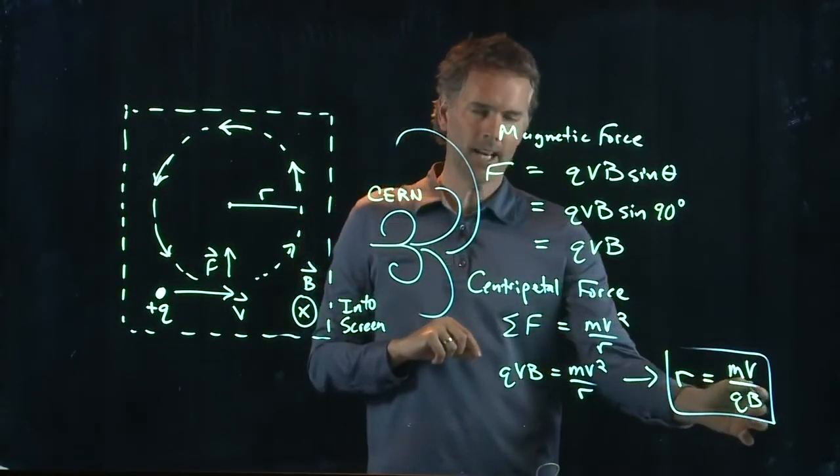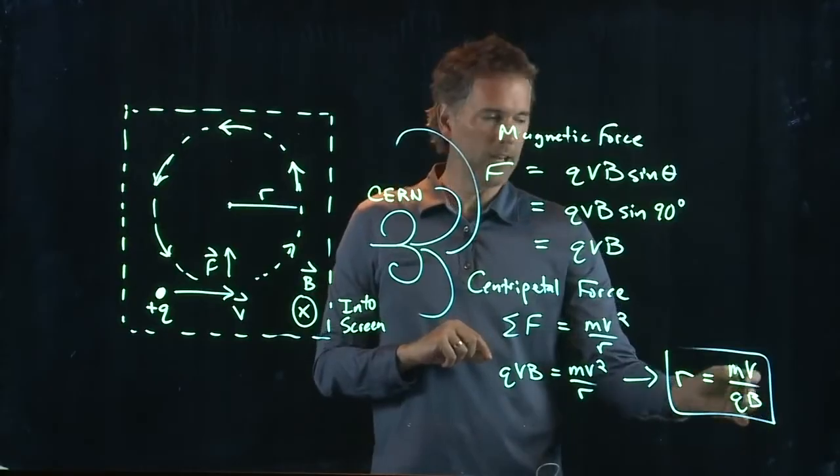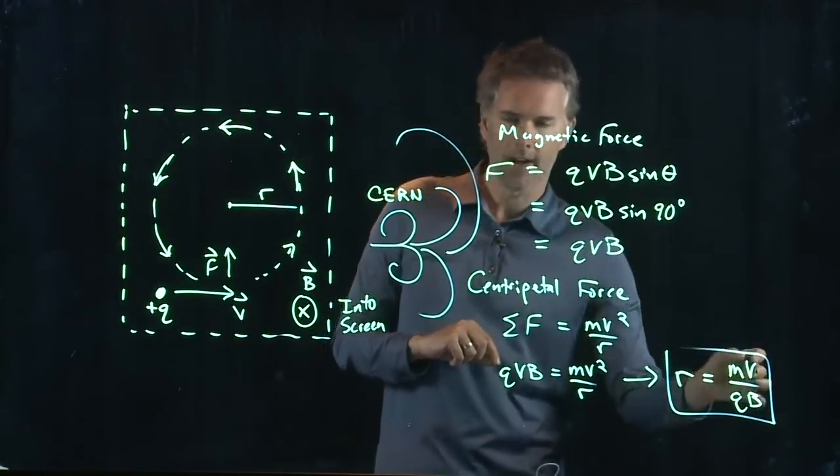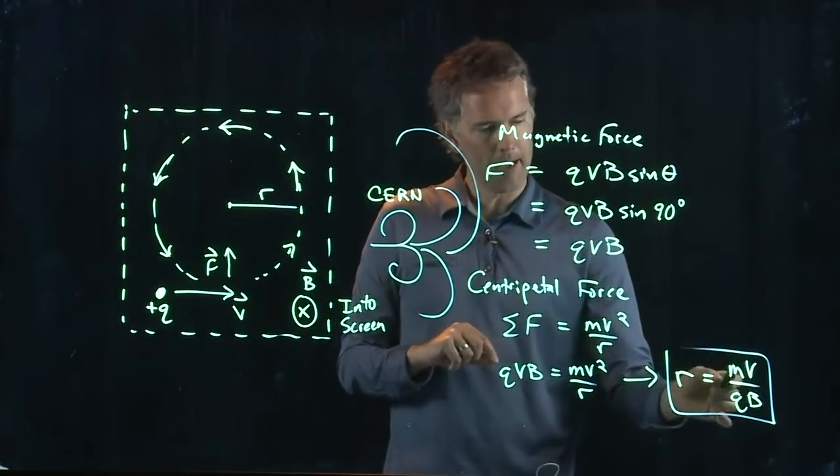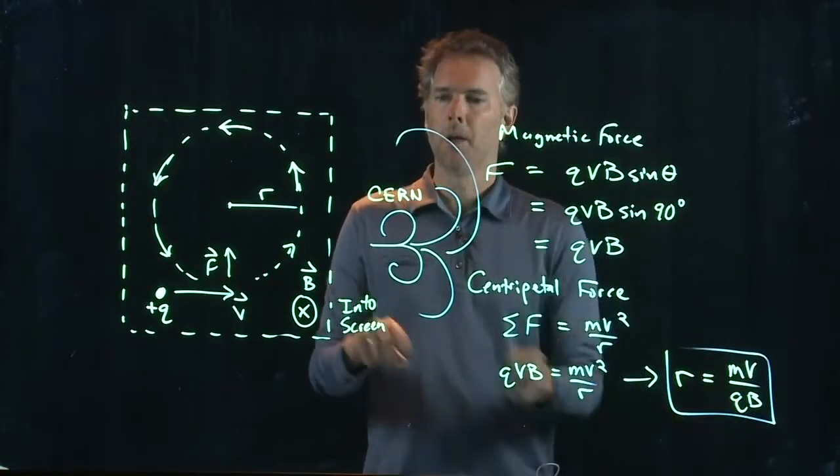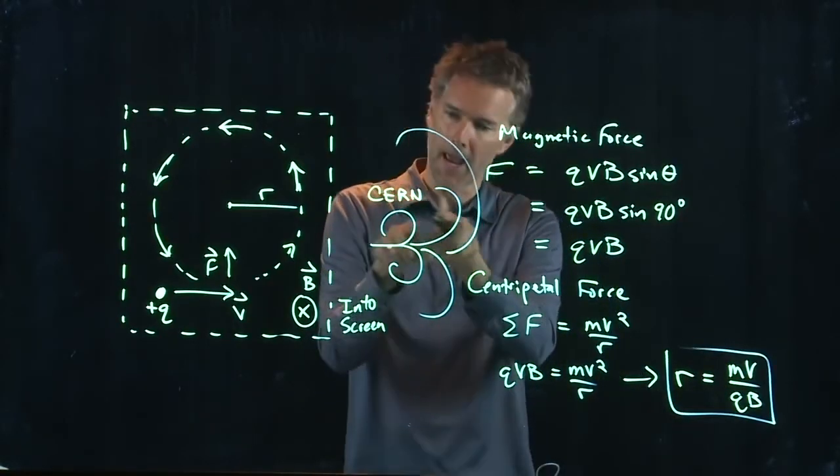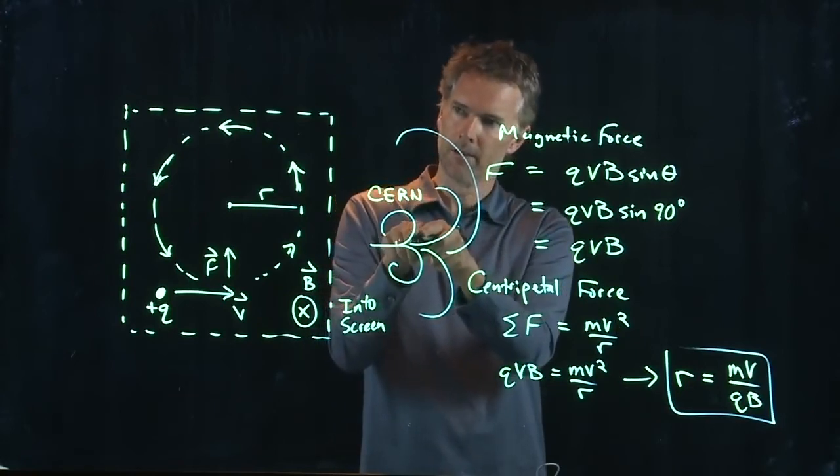And if they know the magnetic field that was in there, they can figure out something about how fast it's moving. What's the mass? What's the charge on it? Positives are going to go this way. Negatives are going to go the other way.